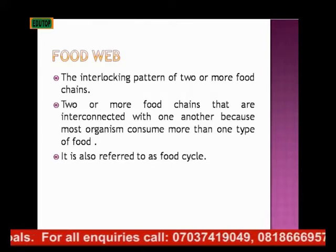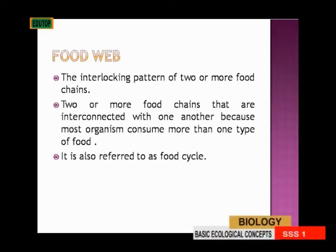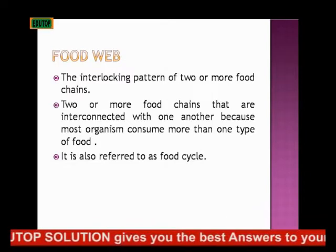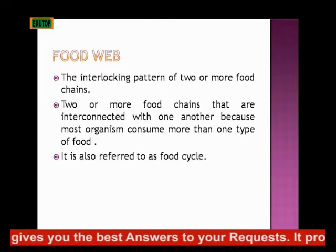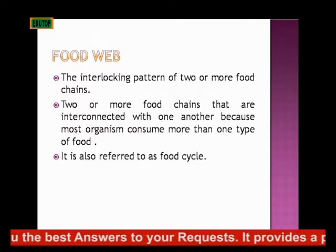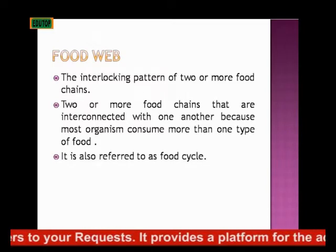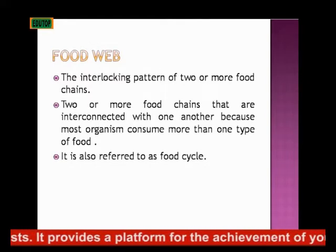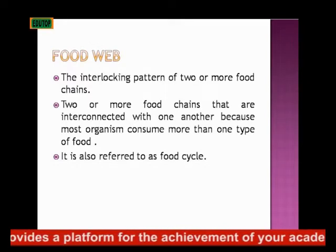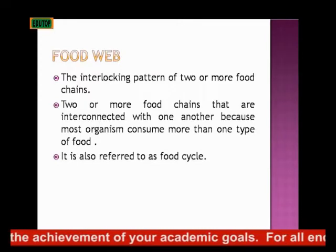The food web is also referred to as the food cycle — the cycle of food. This one eats that one, then another eats this one, and it keeps continuing in a circular manner, because at the end of the food chain there is decay. Decomposers make nutrients available for plants, and the chain can start all over again. That is why we call it the food cycle.